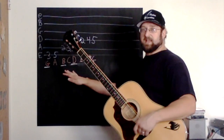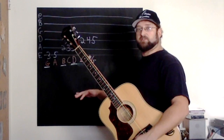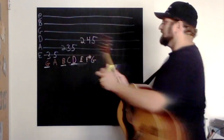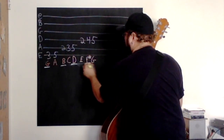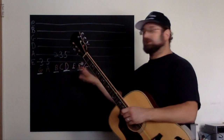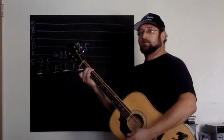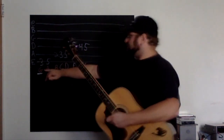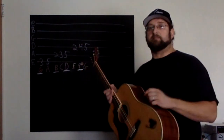Now, every once in a while someone wants to throw in an added note, and what they like to do a lot is these seventh chords. So if we add in this F sharp, because it's the seventh note of the scale, we call this a major seventh — because it's actually the seventh note of the major scale. So we call that the major seventh.